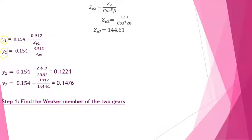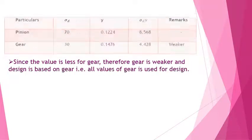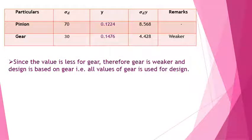Next step is to find the weaker member between the pinion and the gear. Computing the strength factor for each: sigma_d1 × Y1 = 8.568, and sigma_d2 × Y2 = 4.48. The value is less for the gear, so the gear is the weaker member, and the design will be based on the gear.